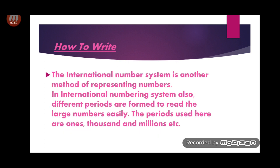The international number system is another method of representing numbers. In the international numbering system, different periods are used. After ones, tens, hundreds, we have thousands and ten thousands, then we move into the millions period: ones, tens, hundreds — thousand and millions, and so on. Let's see the chart.